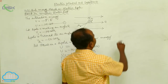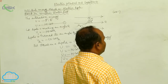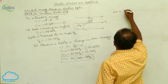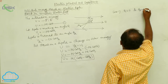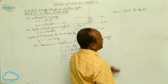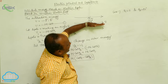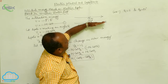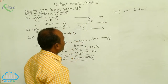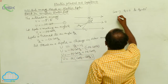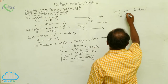In Case 1, when the dipole is turned from θ₁ = 0° to θ₂ = 90°, initially the dipole is parallel to the electric field. When it is turned to perpendicular to the electric field, from θ₁ to θ₂, the potential energy is Pe cosθ₂.